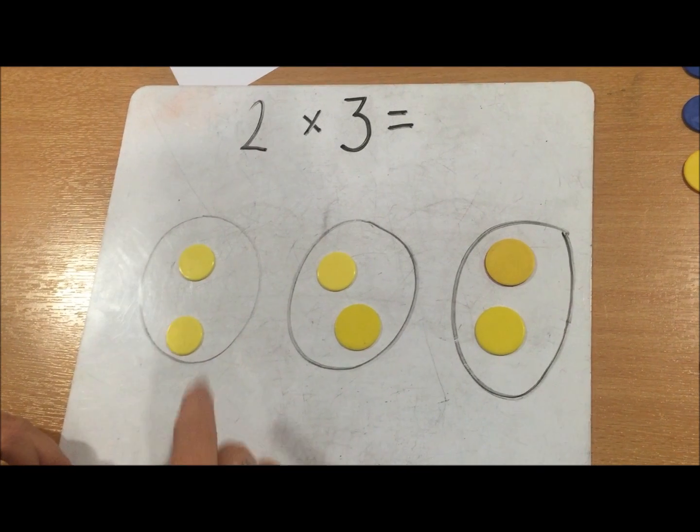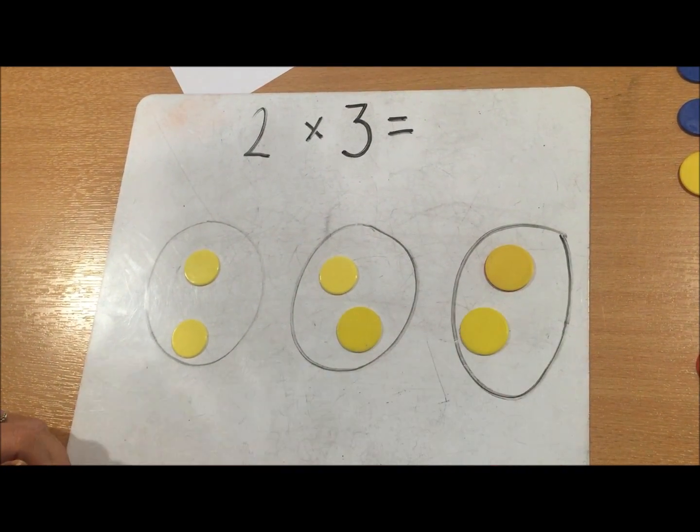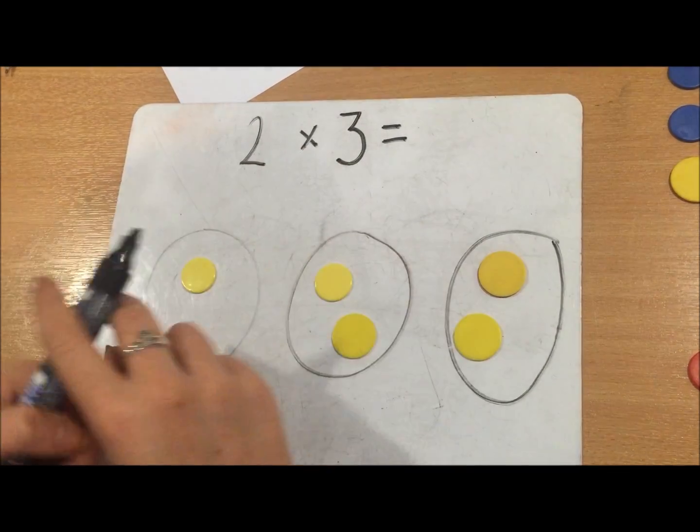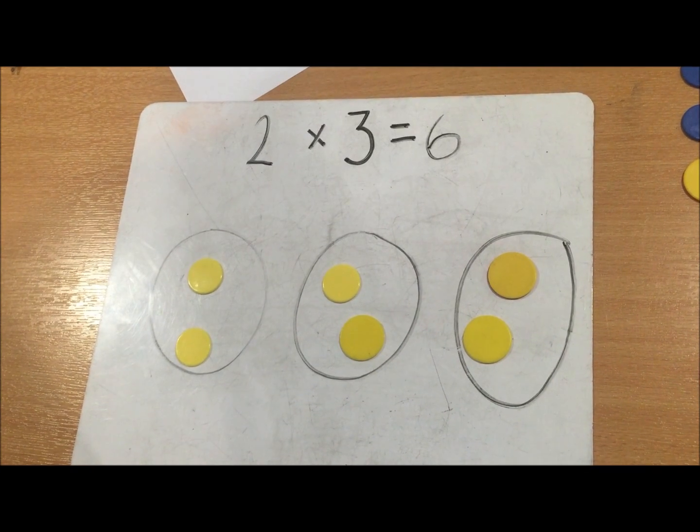to count how many altogether: one, two, three, four, five, six. So 2 times 3 equals 6, and that's how you multiply.